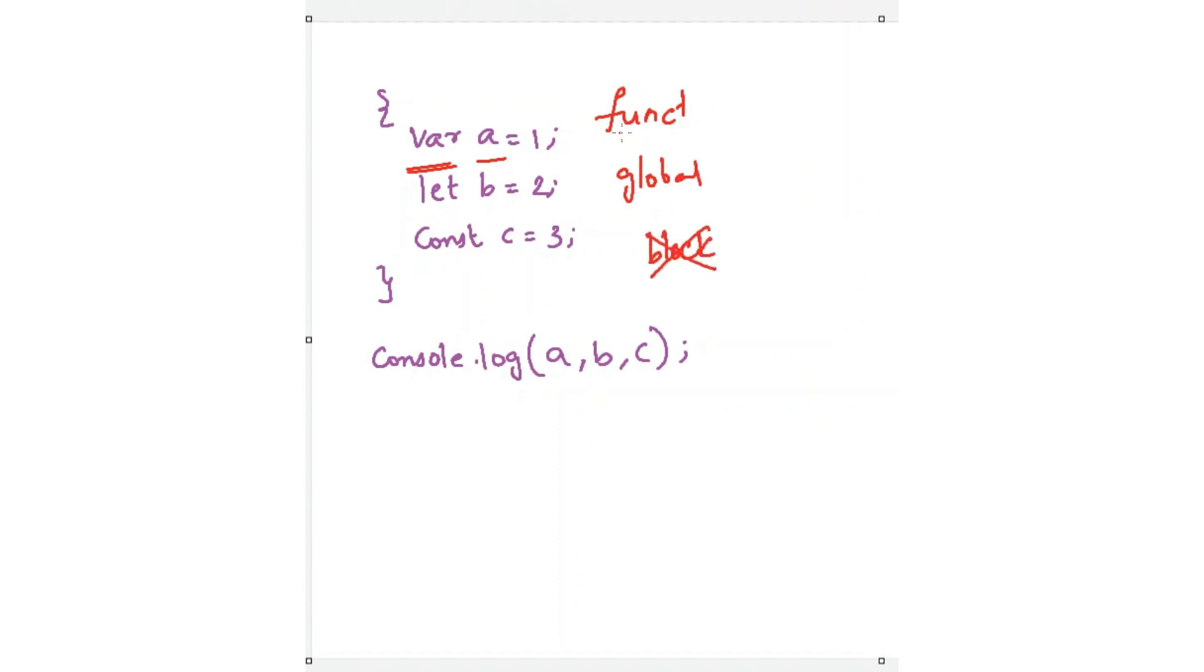So when they are declared inside the function, it will become function scoped. When they are declared outside the function, they will become global scoped. Due to this reason, a will become global scoped here. And we can access the value of a outside this block as well. So due to this reason, a will log 1 here.